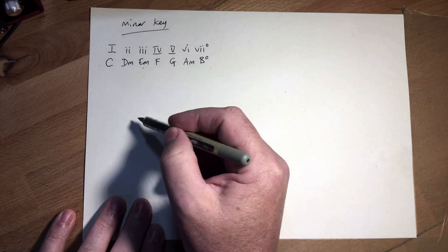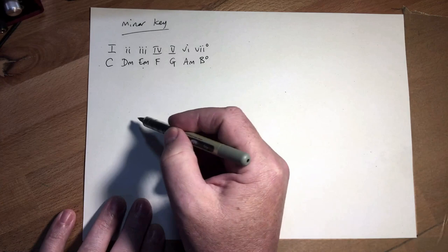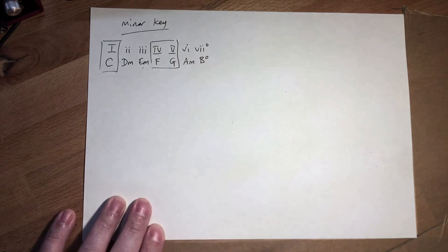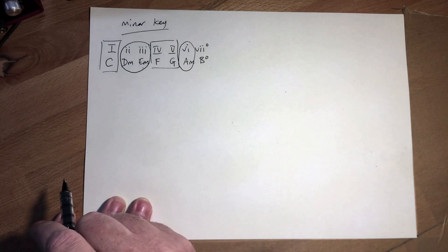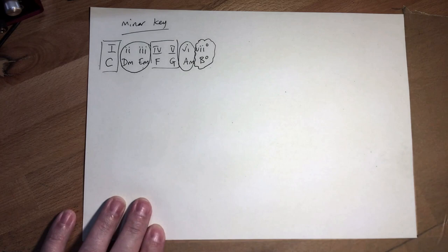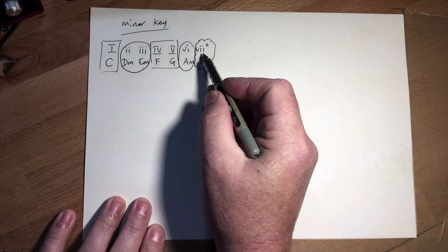I like to divide these up so you can see how they're grouped. In the major key you get three major chords — those are called your primary triads. Then we get three minor chords — these minor chords are the secondary triads. And then we get this chord at number 7, the leading note chord, which is a diminished chord, and it always lands there at chord 7.